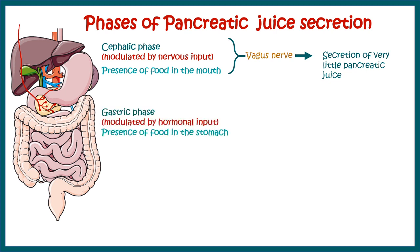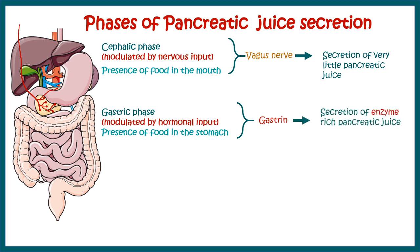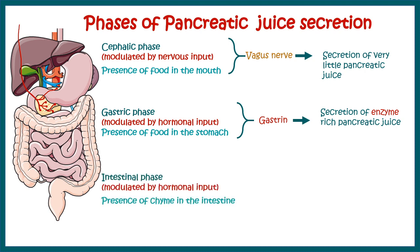After the cephalic phase there is a gastric phase. In this phase, the presence of food in the stomach modulates further activities. Unlike the cephalic phase, the gastric phase is modulated by hormones such as gastrin, which leads to secretion of enzyme-rich pancreatic juice — but only 20% of it is released by gastrin alone.